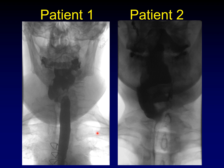The other way that you can get asymmetric utilization of the piriform sinus is if one side is too capacious. If you have no muscular contraction on one side, the contrast will preferentially flow to the path of least resistance. If you can't contract the muscles on that side, the contrast will flow preferentially down that side.